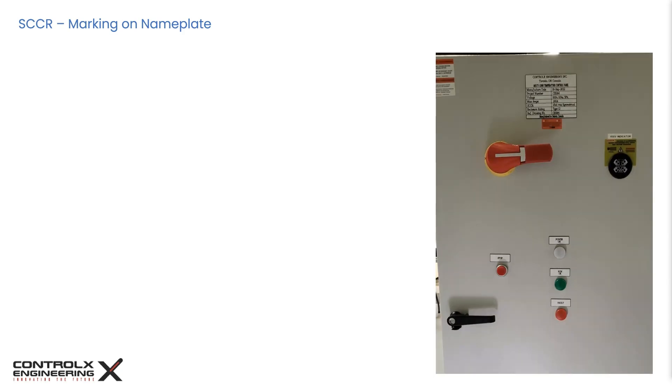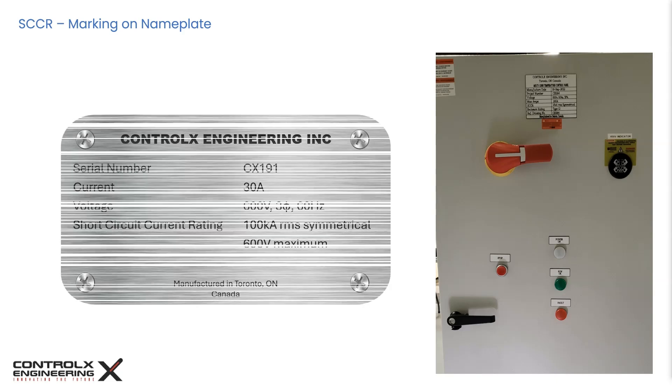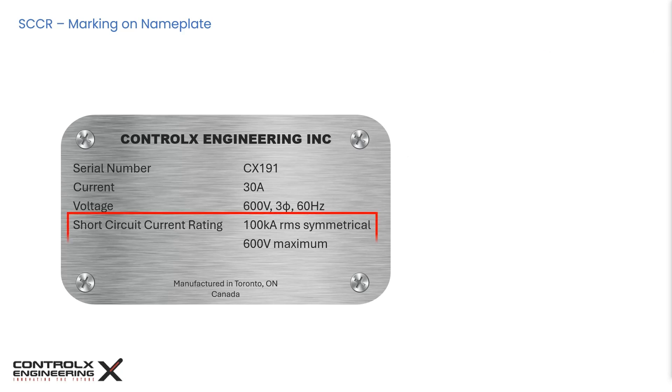Now that we know the importance of SCCR for an industrial control panel, to comply with regulations, the SCCR value must be clearly marked and labeled on the equipment nameplate. Here is an industrial control panel with the necessary markings and safety labels, showing a typical equipment nameplate with the required information including the short circuit current rating.